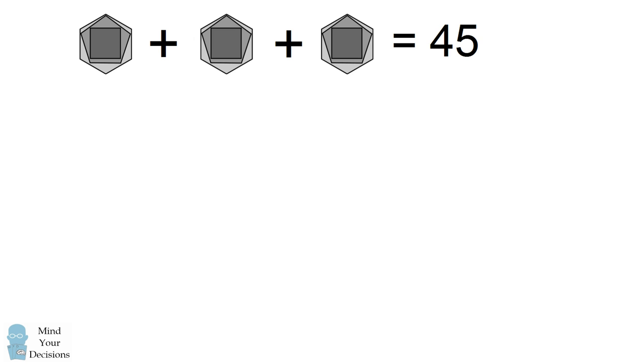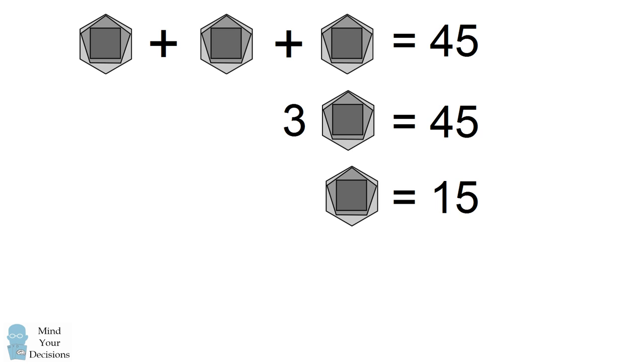We'll start out with the first equation. We have three of these shapes which are equal to 45. This simplifies to one hexagon being equal to 15.